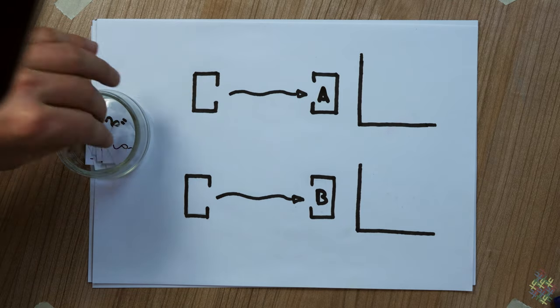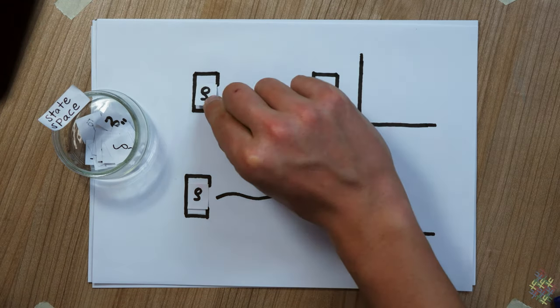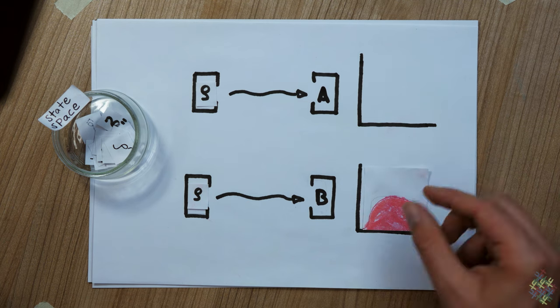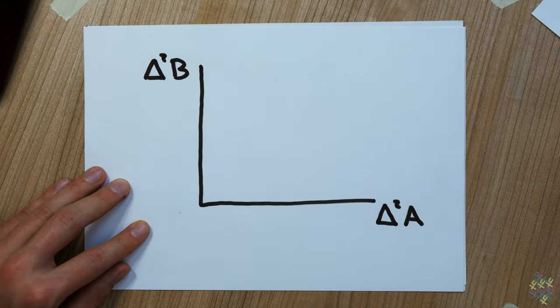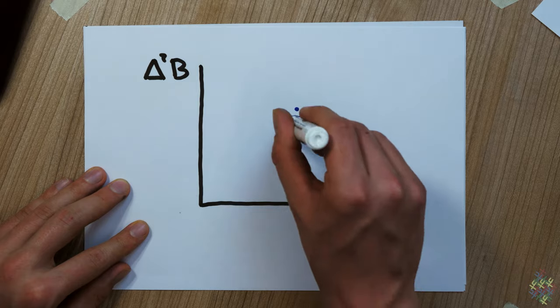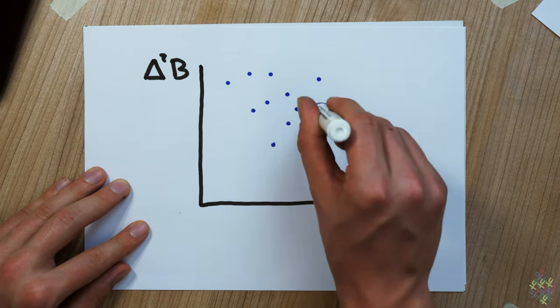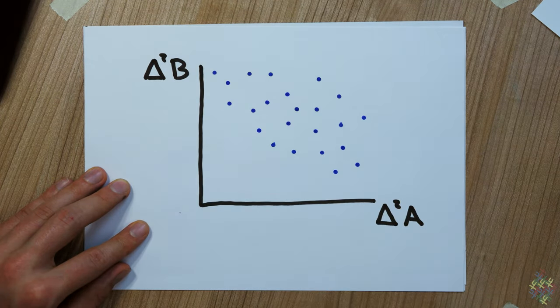So here are the two experiments this refers to with the output distributions indicated. For every rho, we take note of the variances and get one point in this diagram. Changing rho gives more points and, in the end, this shaded region.